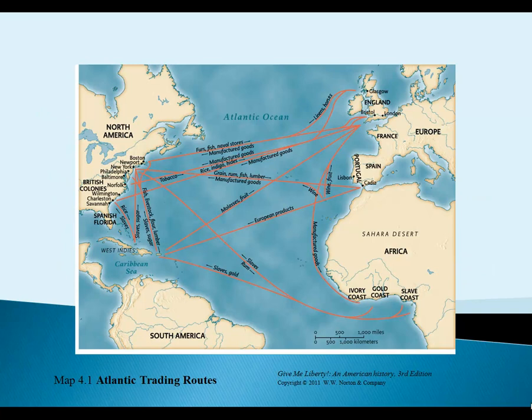A map shows that much of the slave trade went to South America, but Britain participated primarily along the east coast of Africa — the Ivory Coast, Gold Coast, and Slave Coast — where most slaves were picked up. These areas were named by Europeans based on what was traded there: ivory, gold, and slaves. From there, slaves were taken to the Caribbean islands and then often directly to New England. It was quite a profitable business.